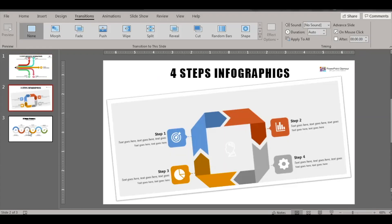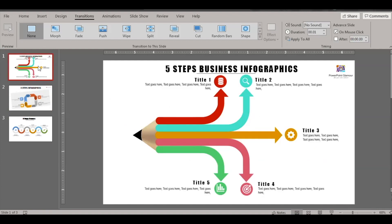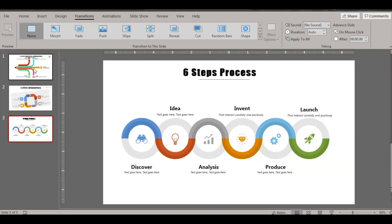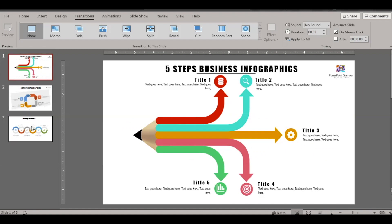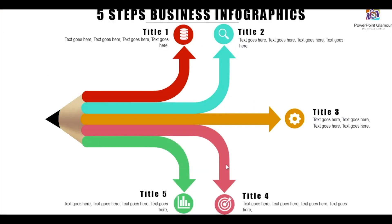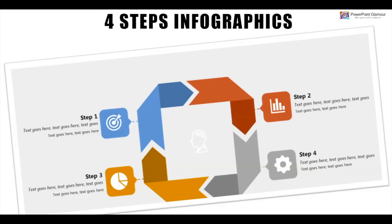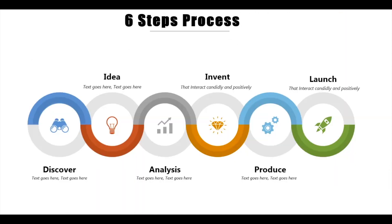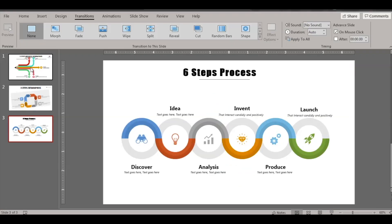Here we have three slides — these are infographics from my previous tutorials. Let's see how to apply transitions to this. Before applying any transition, let's see how the presentation looks without any transition. Click on Slideshow: the first slide appears, click the mouse and the second slide comes in — this is called a transition — click again and the third slide appears. That's a transition without any effects.